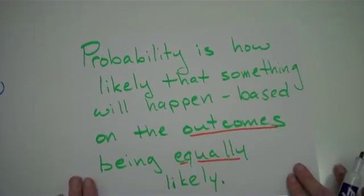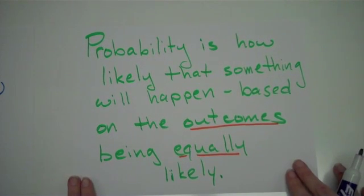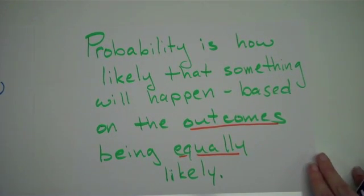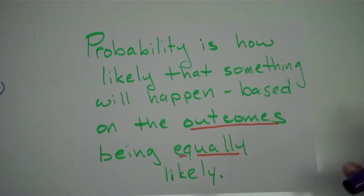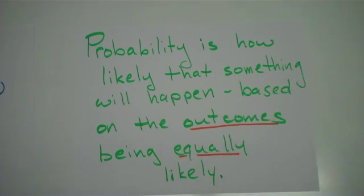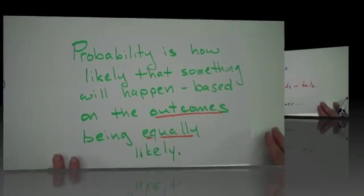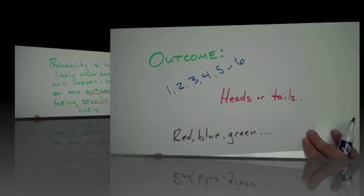Probability is how likely that something will happen based on the outcomes being equally likely. What that means is, like if you flip a coin, you have an equal chance of getting heads or tails. So you're going to say, how likely is it that you're going to get one or the other? You guys see that all the time with lottery or rolling a dice.